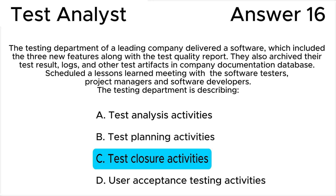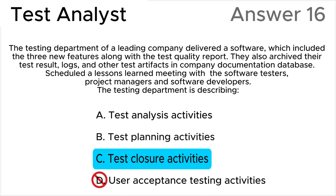All the rest of the answers are wrong. Answer A is wrong because test analysis activities is an active phase of software development. Answer B is wrong because test planning activities is also an active phase of software development. Answer D is wrong because user acceptance testing is an execution test activity.